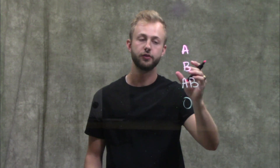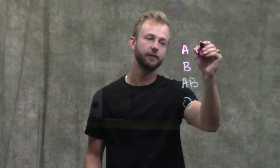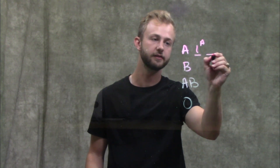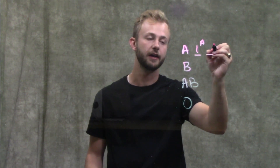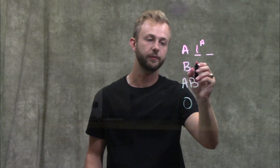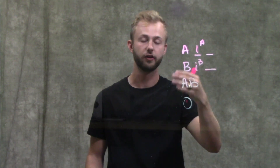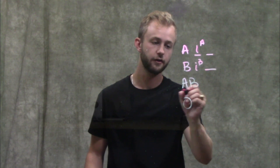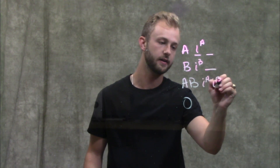For an individual to have an A blood type, they need to have at least one IA allele, and the other could be either IA or just I. For a B blood type, they would need IB and then either another IB or just I. For AB, they have to have IA and IB.